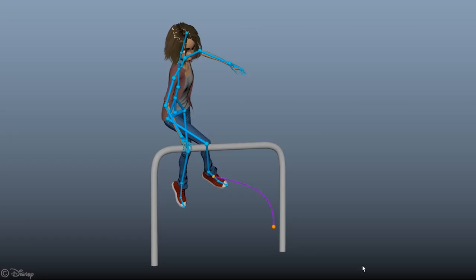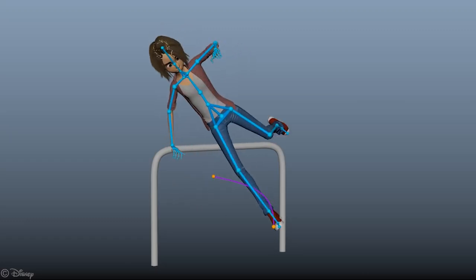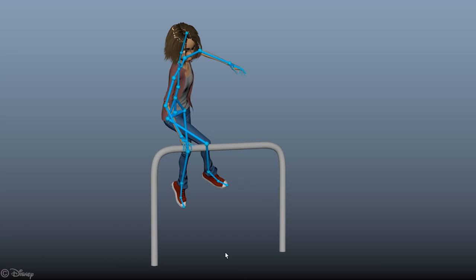The user can select any part of the structure to see its trajectory over time. If desired, that trajectory can be seen in local space with respect to another joint.